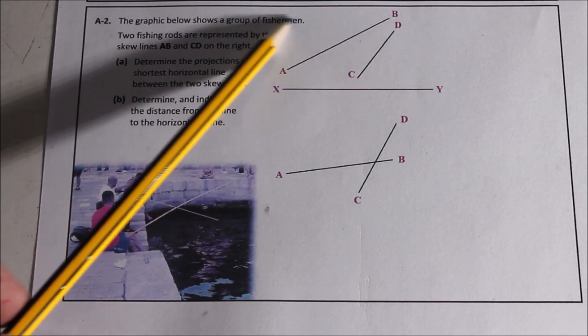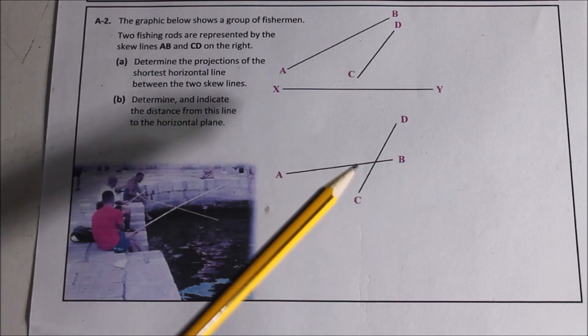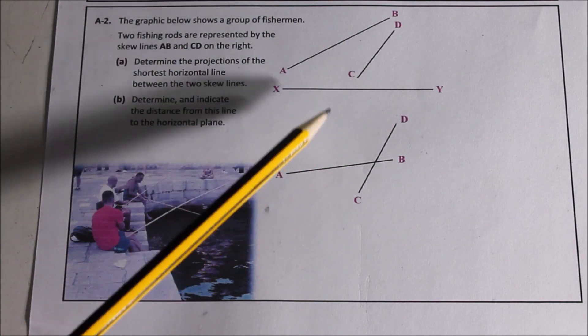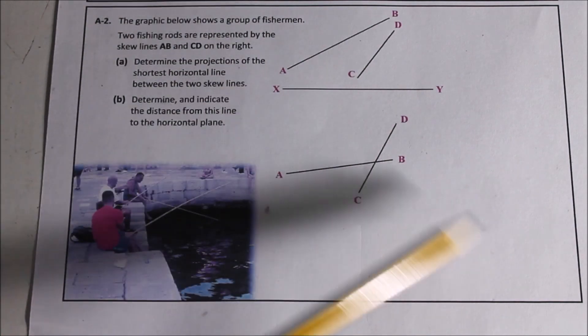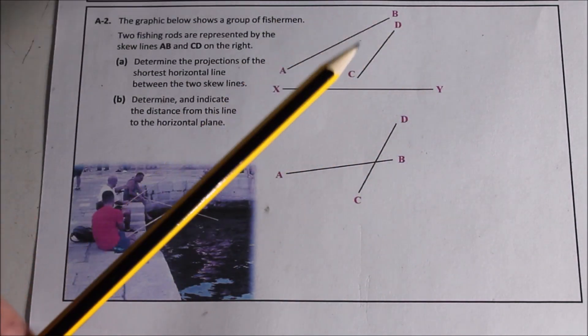Because if we have a horizontal line here in elevation that's parallel to the XY line, in plan that same line will be a true length. And if we have a true length line here represented by both skew lines, we can draw a point view of it and show the edge view of the two skew lines. So let's bring CD over to B and draw a plane in elevation.